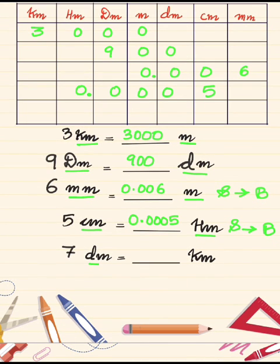Seven decimeters equals to how much kilometers? Please comment down below.